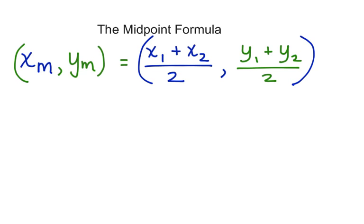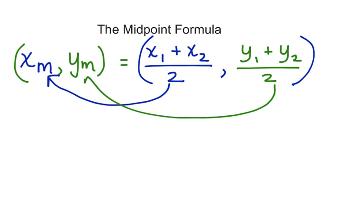Using the coordinates of the original endpoints, we add the x1 coordinate with the x2 coordinate and divide that by 2. And we take the y1 coordinate plus the y2 coordinate and divide that by 2. This will give us the x coordinate of the midpoint and this will give us the y coordinate of the midpoint. Now let's look at the line segment again because we're going to need the coordinates of the endpoints to use in the midpoint formula.